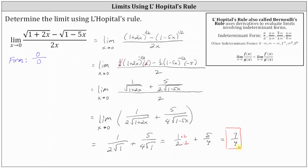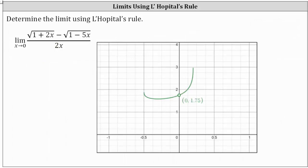Before showing the rationalization method, let's verify this graphically. Here we have the graph of the original function. Notice as we approach x equals zero from the right and from the left, we are approaching the y-value of 1.75, which is seven fourths.